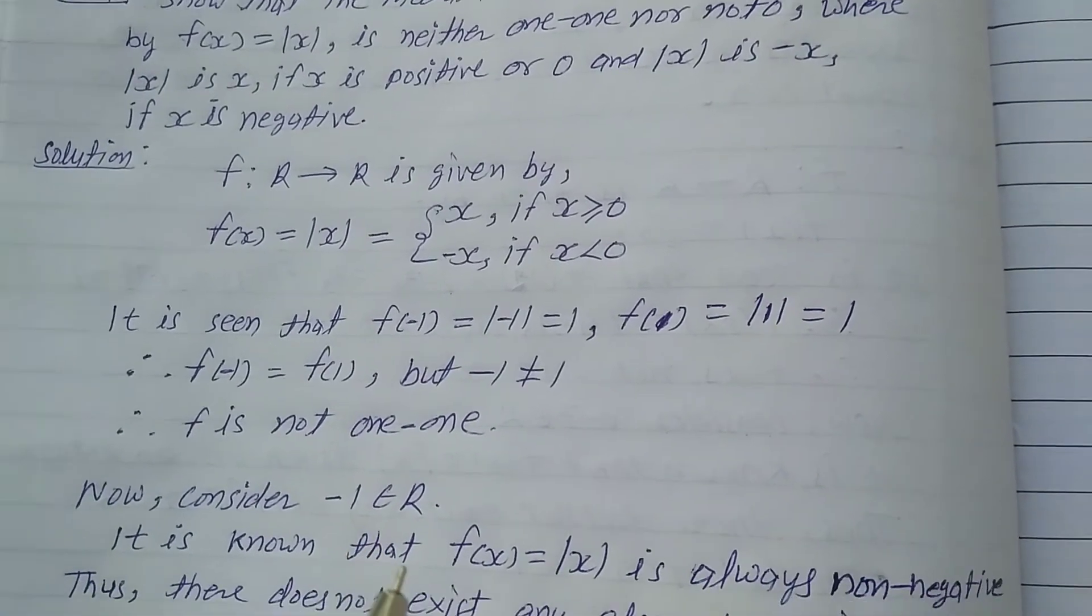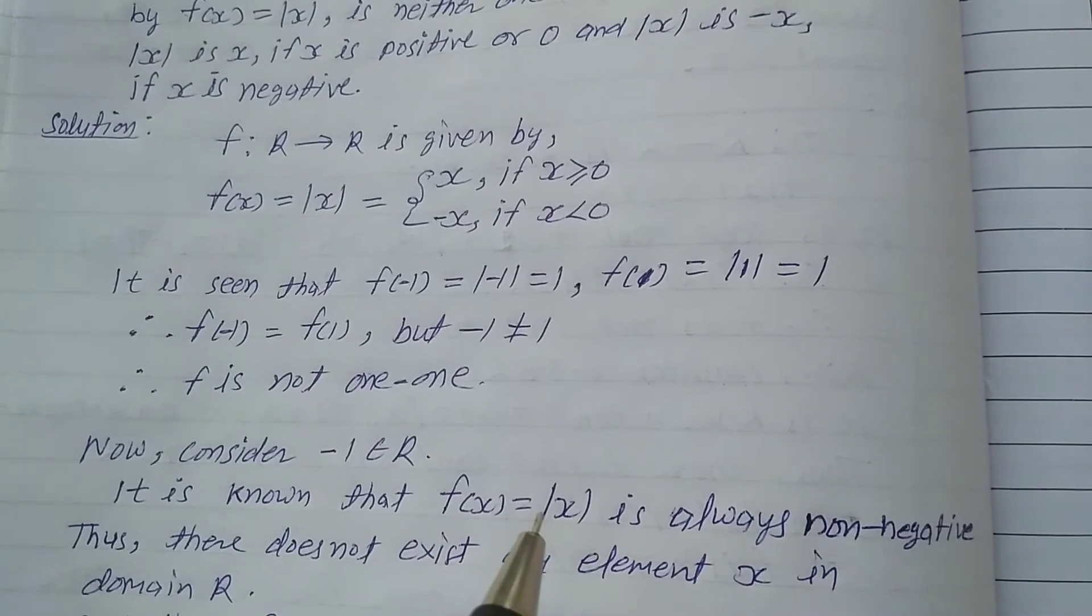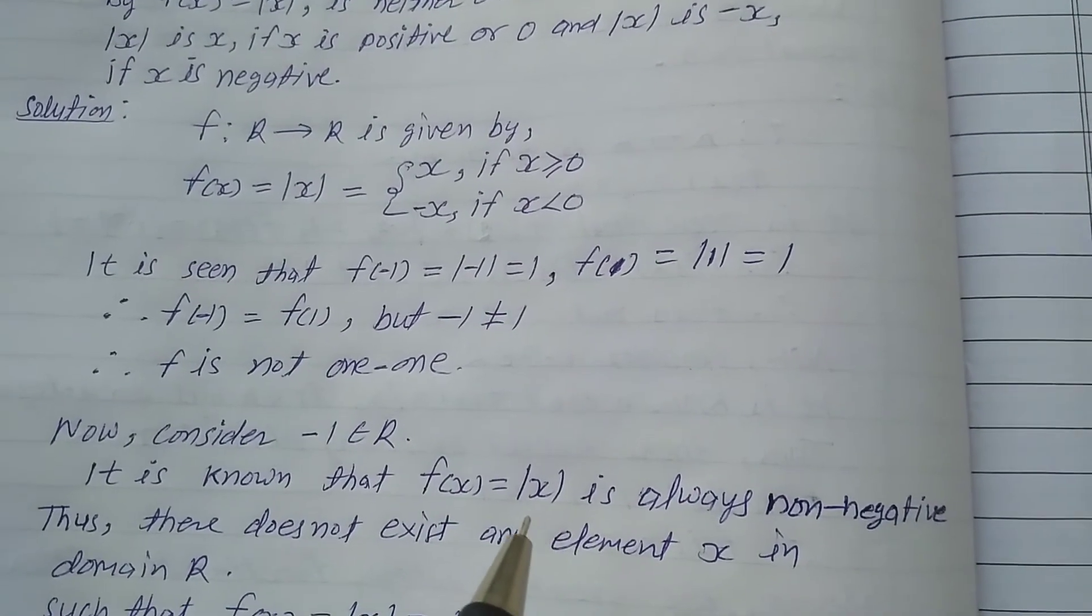Now consider -1 ∈ R. It is known that f(x) = |x| is always non-negative.